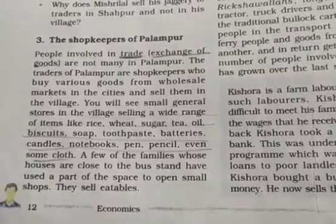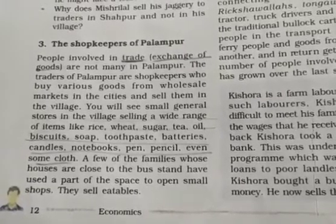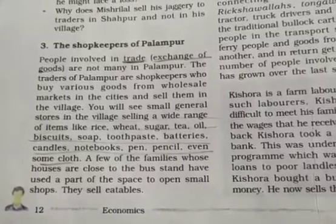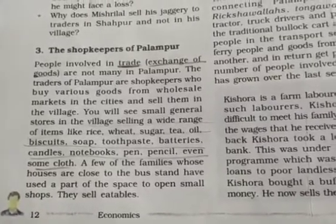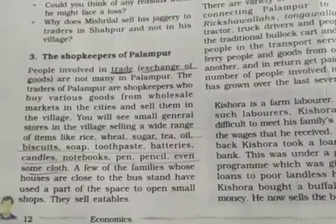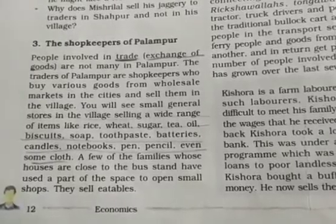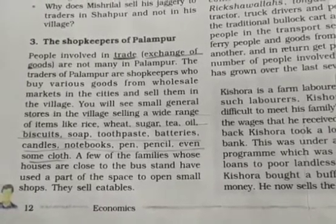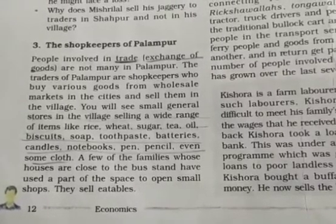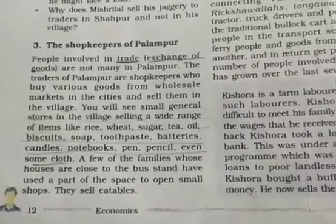You will see small general stores in the village selling a wide range of items like rice, wheat, sugar, tea, oil, biscuits, soap, toothpaste, batteries, candles, notebooks, pens, pencils, and even some clothes. Different items needed in daily life are easily available in Palampur. A few families whose houses are close to the bus stand have also used part of their space to open small shops selling eatables.